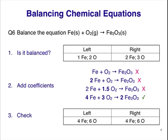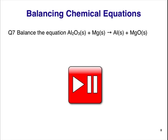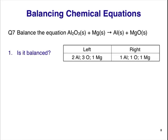One final check: there are 4 Fe and 6 O on the left and 4 Fe and 6 O on the right. Question 7. Balance the equation Al2O3 plus Mg producing Al plus MgO. Pause the video here and figure out your answer. First, we'll count the atoms. It's not balanced because there are 2 Al on the left and 1 on the right, 3 O on the left and 1 on the right, and 1 Mg on the left and 1 on the right.